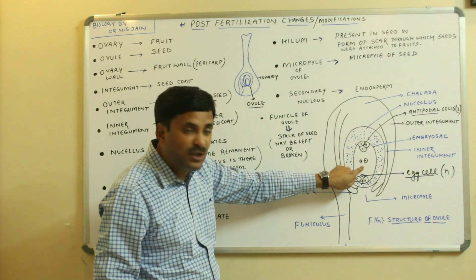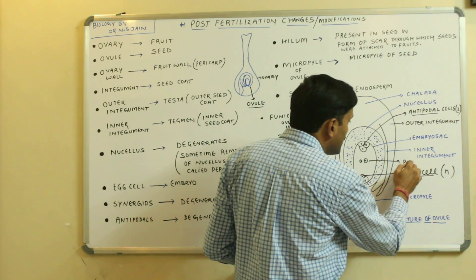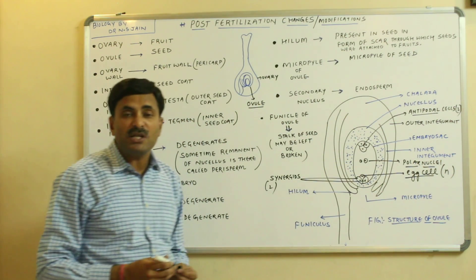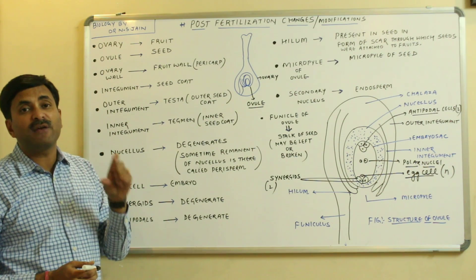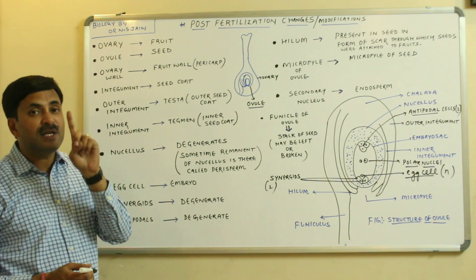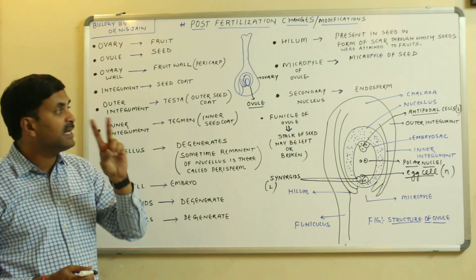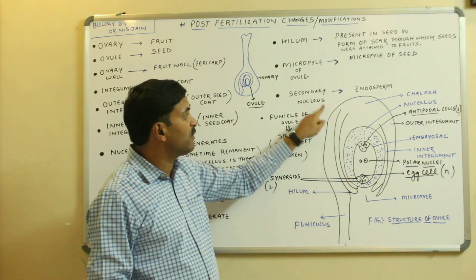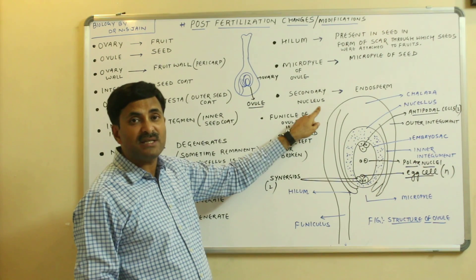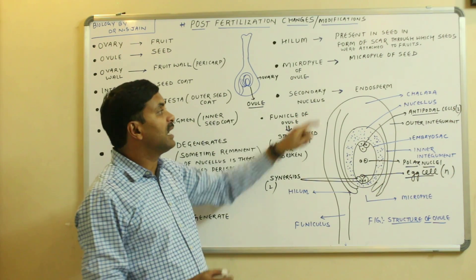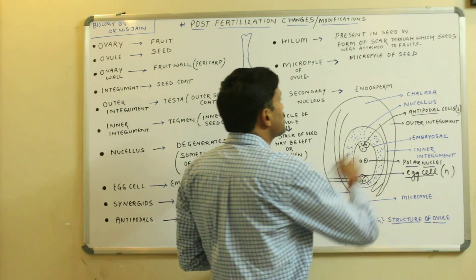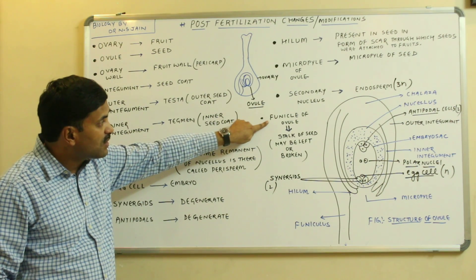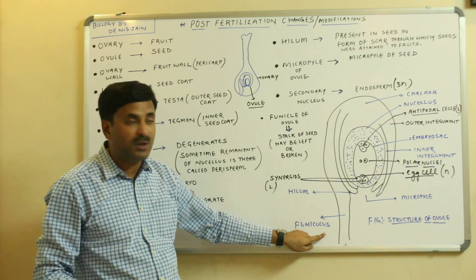At the center of the embryo sac, polar nuclei are found. In angiosperms, just before fertilization, these polar nuclei fuse together. There are two polar nuclei, each haploid (n), so n + n gives 2n — forming the secondary nucleus. When the secondary nucleus fuses with one male gamete, a triploid (3n) structure is formed, called the endosperm.